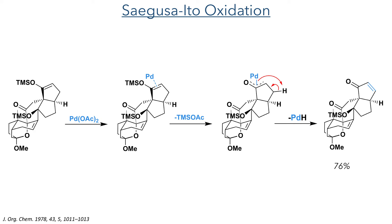This reaction uses palladium(II) acetate, which first coordinates to the alkene and promotes the elimination of TMS acetate. A beta-hydride elimination then follows where the palladium abstracts a hydrogen atom and produces the alpha-beta unsaturated ketone in a 76% yield.